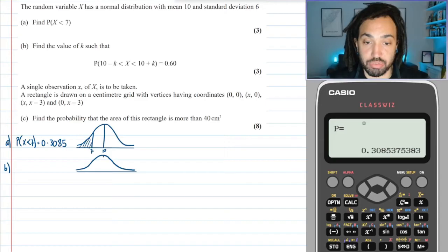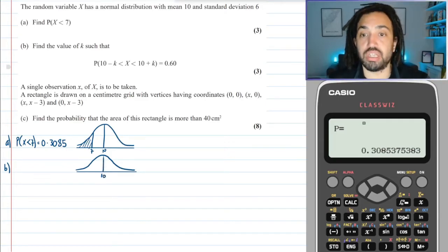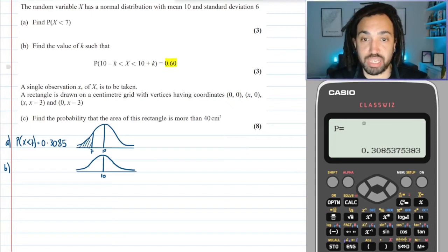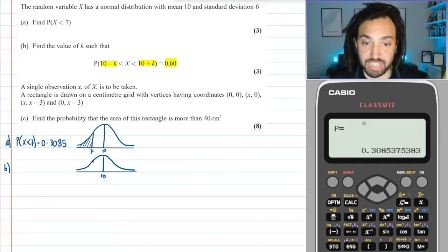So again, we've got this bell curve and we've got 10 in the middle. It's saying that there is a probability of 0.6 of X being in between k less than 10 and k plus 10.